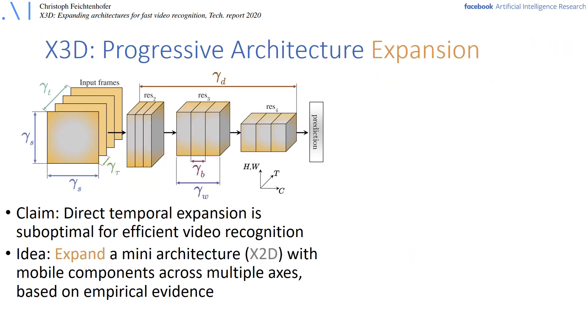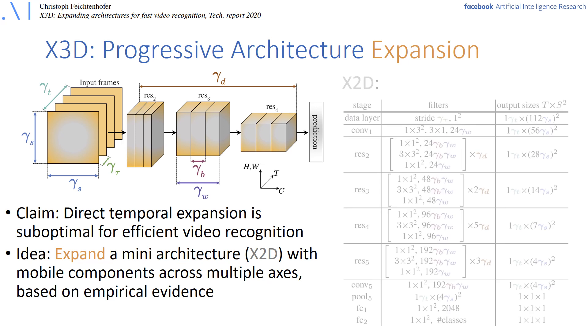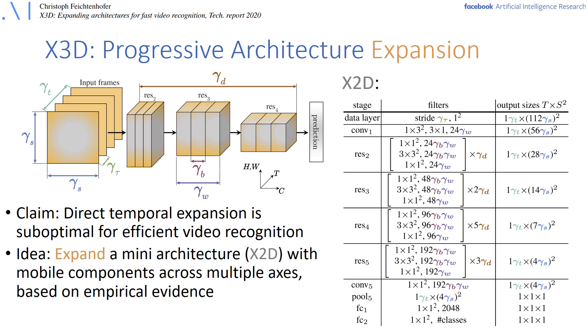Our claim in this work is that direct temporal extension is suboptimal for efficient video recognition. Our idea is called X3D, which is an architecture that is expanded from a tiny image model across multiple axes to achieve good computational accuracy tradeoff. The tiny model is shown on the right and called X2D. Here you can see that it has tiny resolution at the input channel and depth.